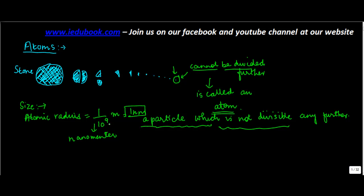So you can imagine, 1 meter will be how much — it's not too big. If an atom's radius is 1 upon 10 to the power 9, you can imagine it might be almost invisible. You might have to actually use a microscope. But an atom is a very important thing because our entire world is actually made of atoms.